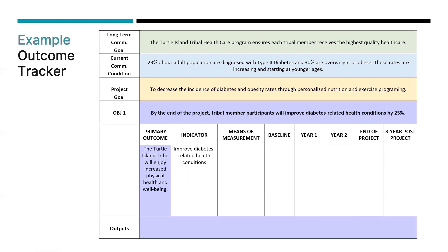Maybe your tribe has committed to absorbing the project into a specific department once it ends. You would anticipate how that would go. It doesn't have to be at the same level as when it was funded by ANA — it might be at a lower level. You want to enter a data point for the three-year post-project. Outputs are going to be finalized in the OWP, and once finalized, you want to consistently state your outputs and circle back to enter them here in your Outcome Tracker. Remember to complete one of these forms for every objective in your project.